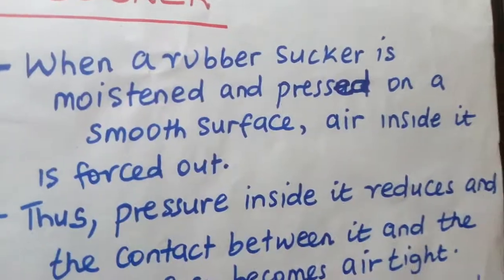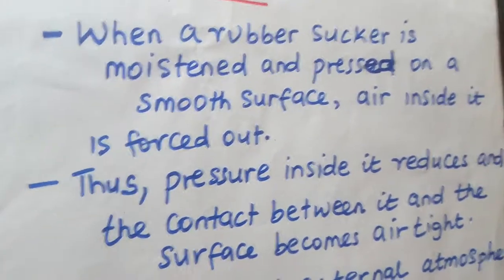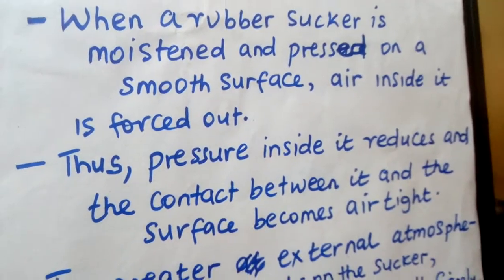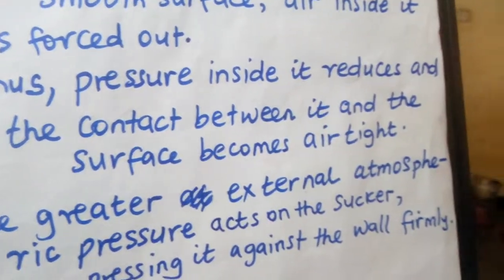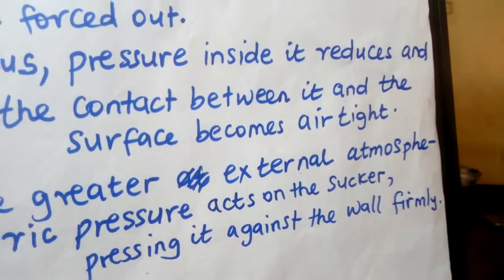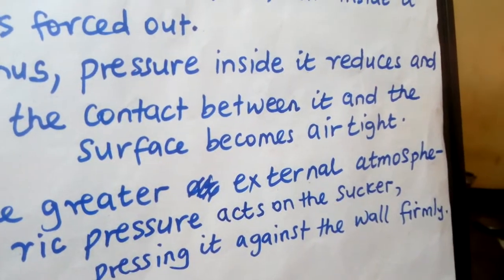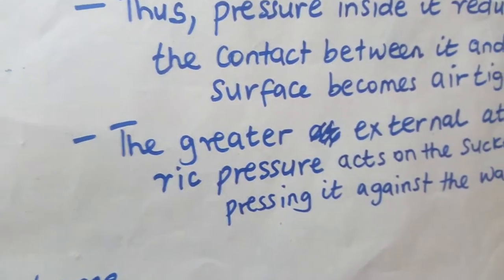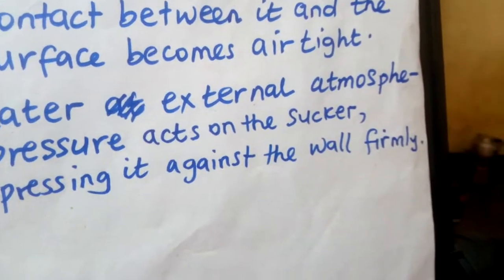In summary: when a rubber sucker is moistened and pressed on a smooth surface, the air inside is forced out. Inside remains a vacuum, so the pressure inside is reduced and the contact between the sucker and the surface becomes airtight. Therefore, the atmospheric pressure becomes greater than the pressure inside, and the greater atmospheric pressure acts on the sucker, pressing it firmly against the wall.